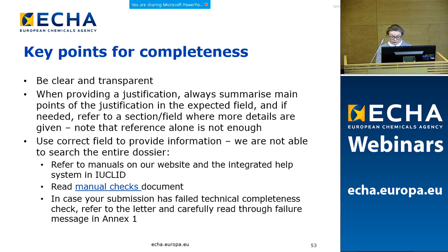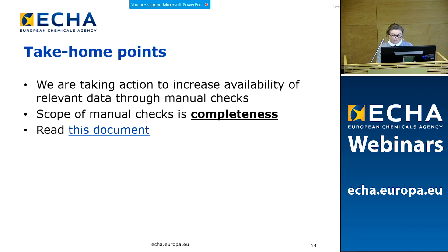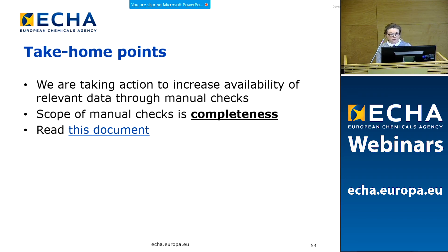To summarize some key points on how to submit a complete dossier: be clear and transparent. When providing a justification, be very clear and precise on what you base it on. Provide a summary of key points in the expected field, and if needed, refer to the correct field or section where further details are given. Remember it is not enough to just refer to another section without any explanation. Use the right field to report the information, as ECHA cannot search through the whole dossier to find it. Make use of the available manuals as well as the built-in help system in IUCLID. Read through the document on manual checks on the ECHA website, and if your first submission has failed, read carefully through the TCC letter and the failure message in Annex 1. Run the validation assistant on your dataset and the created dossier before submitting to REACH-IT.